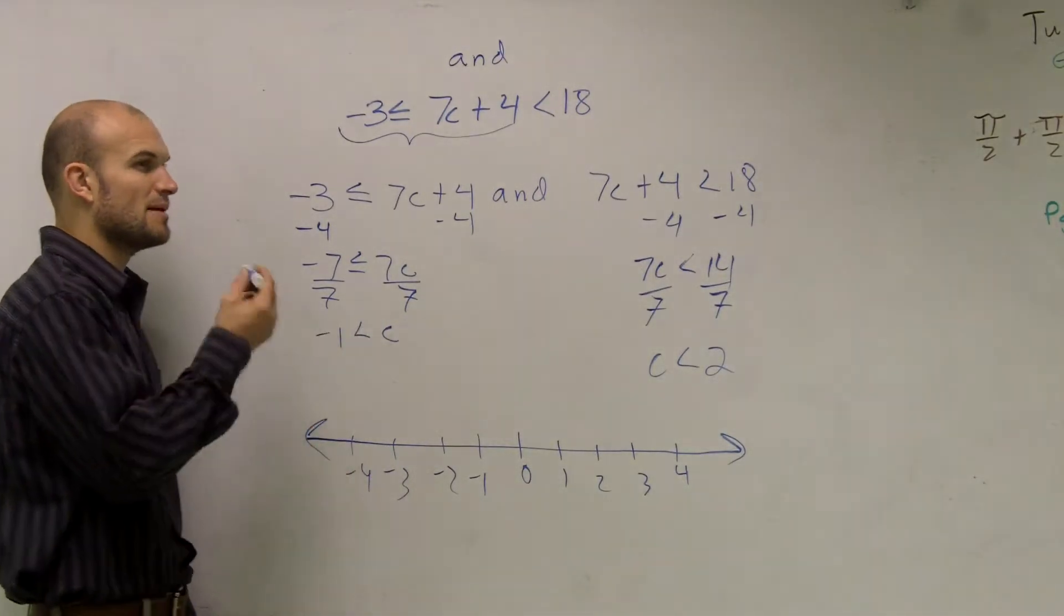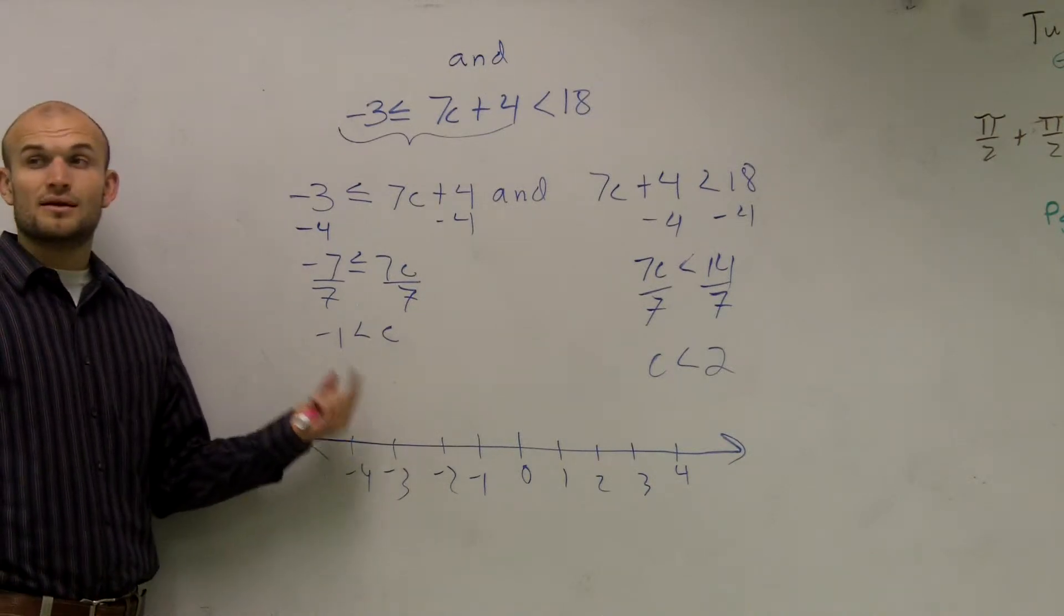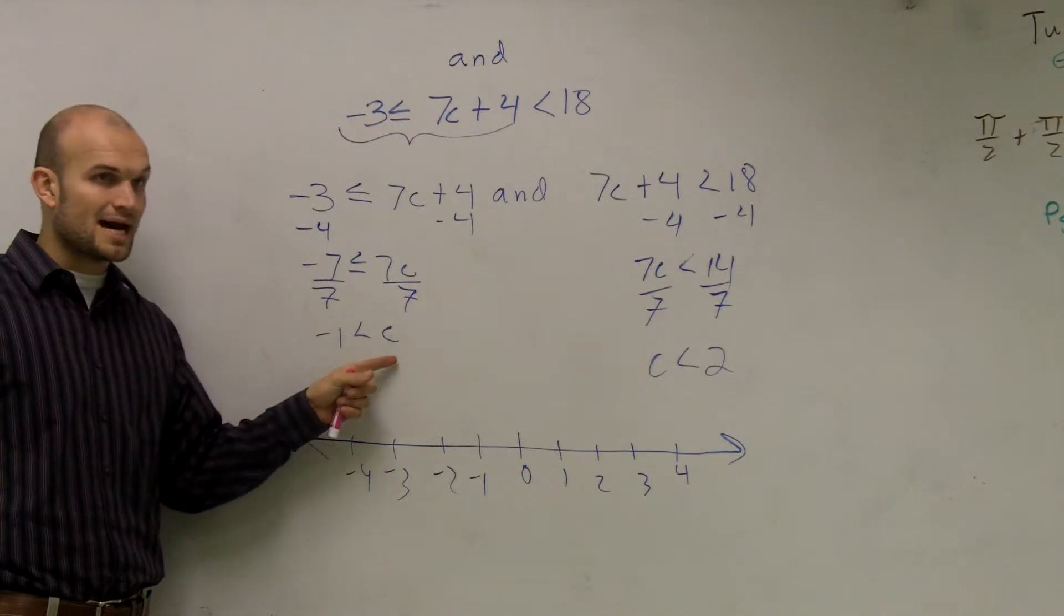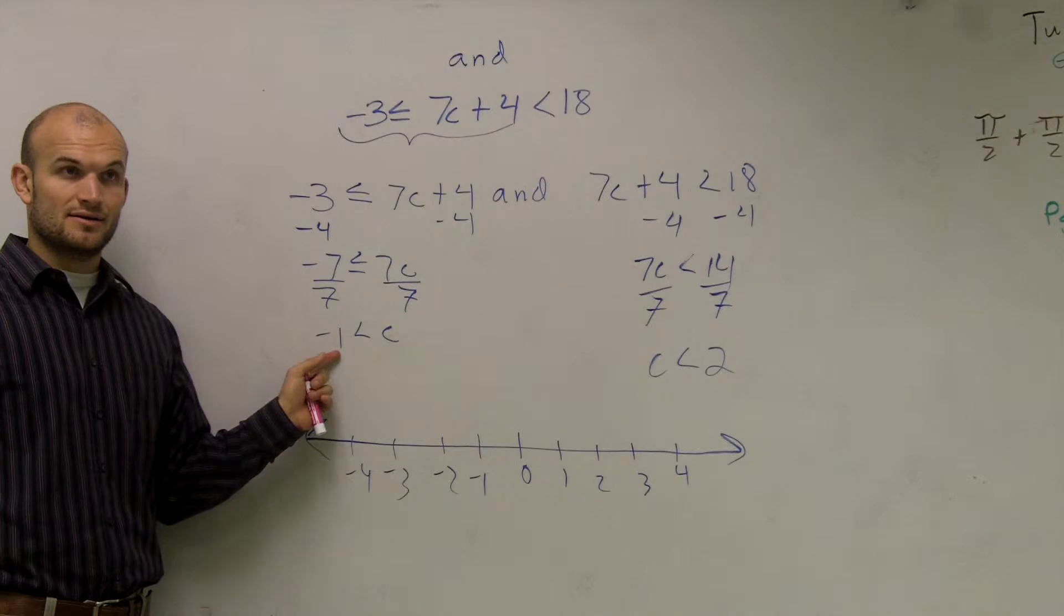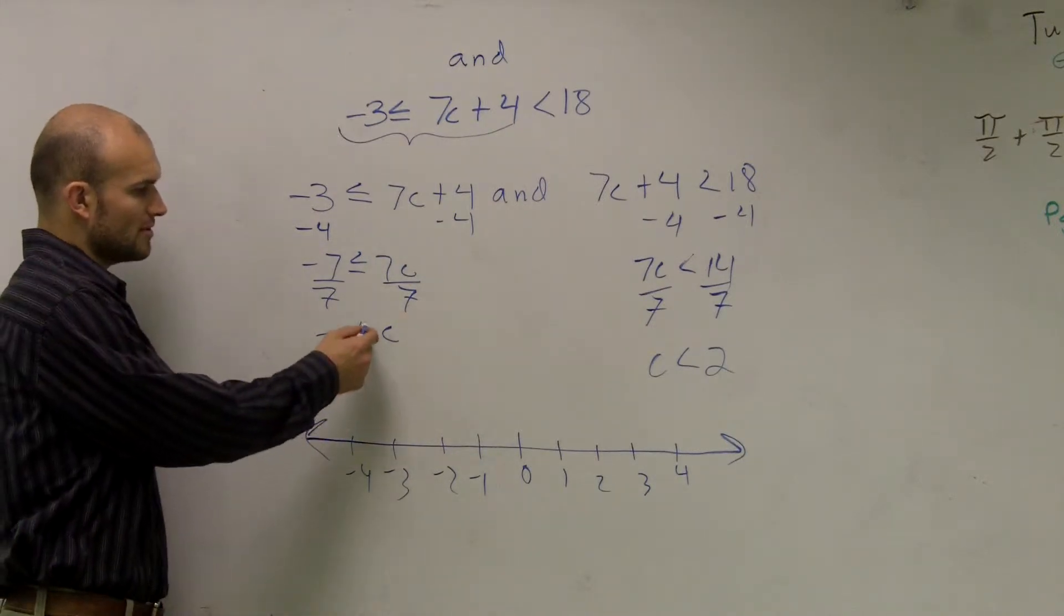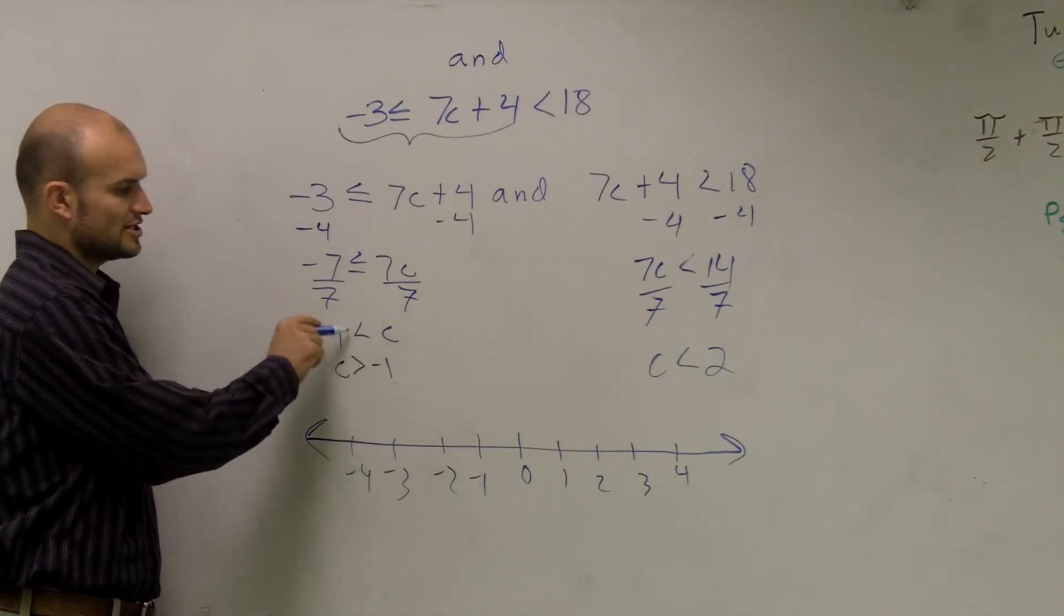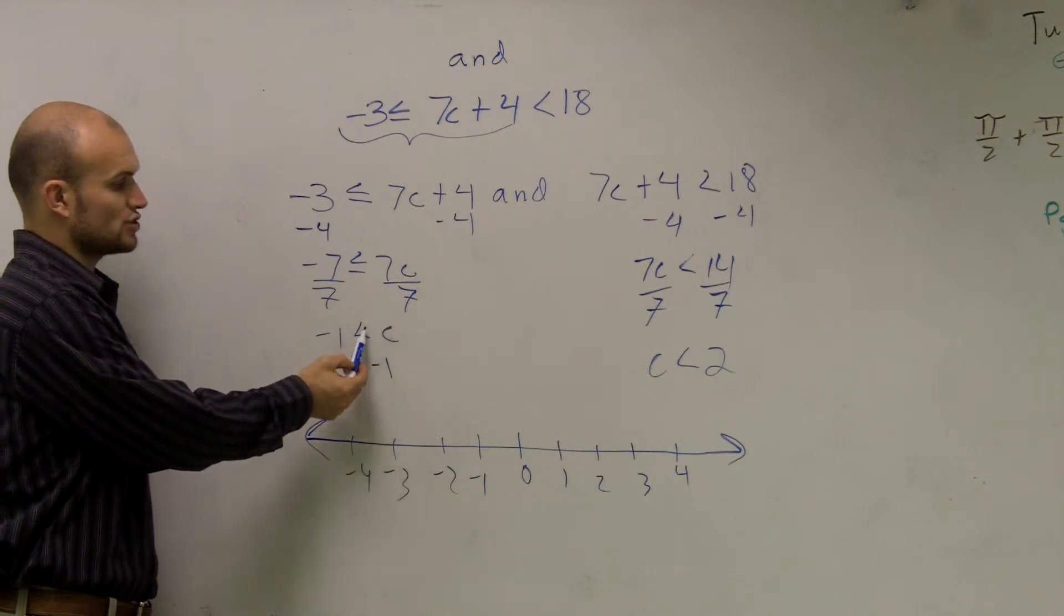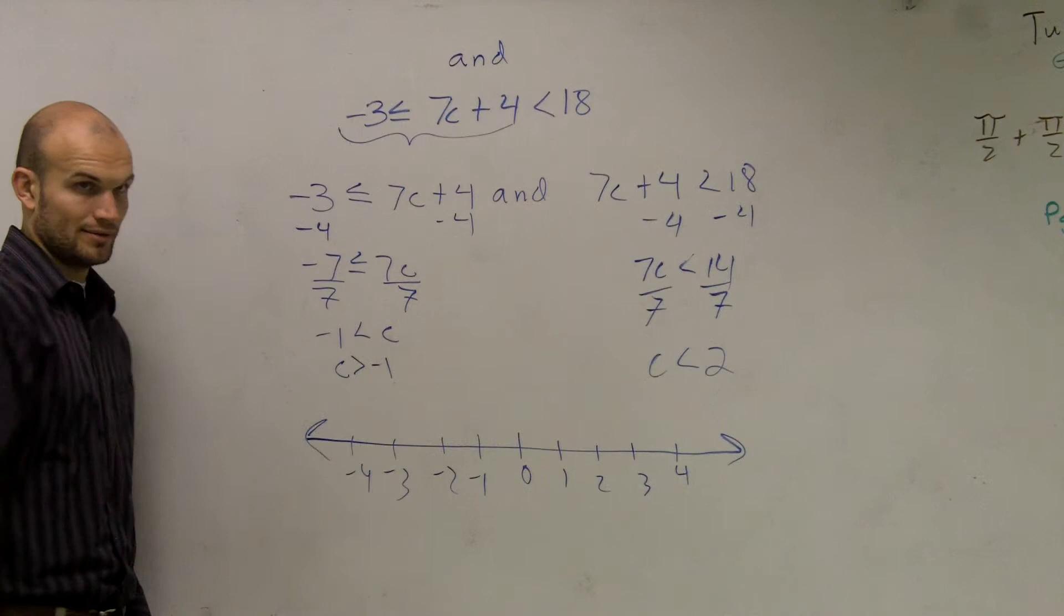So this one says - remember guys, when you're reading an inequality, we always like to read left to right. However, if you have your variable on the right side, either flip it so your variable's on the left side, or read it from right to left. Remember, always make sure your inequality sign is still pointing the same way towards the variable. So you could say c is greater than or equal to negative 1.